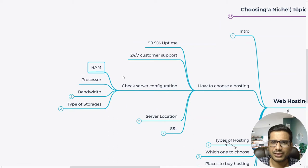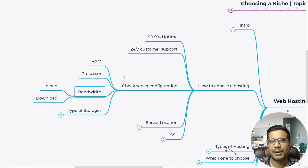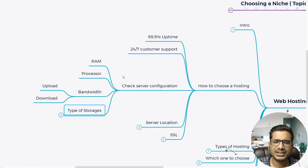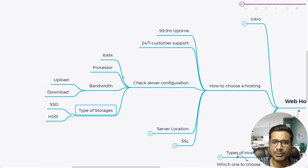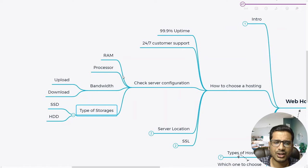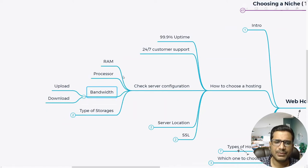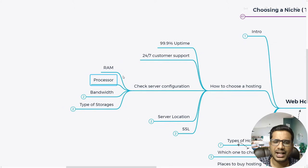Third, check the server configuration — check the RAM of the server, the processor, and the bandwidth, which is nothing but the upload and download limit. Also check what type of storage space they provide: are they providing solid state drives (SSDs) or normal hard disks (HDDs)? SSDs give better performance than HDDs.